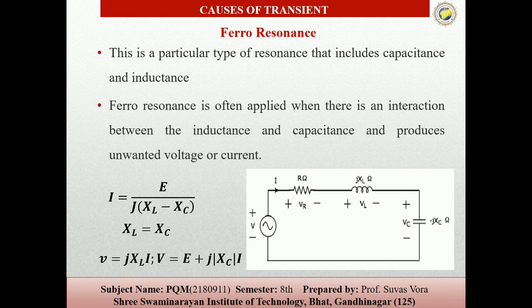In ferroresonance, there is high voltage at the disturbance lines, then switching of the transient, then underground transmission primary winding, then three-phase systems with single-phase switching are affected. If we consider the inductor, problems such as noise, overheating, failure of surge, overvoltage, flickers, and other issues will arise.